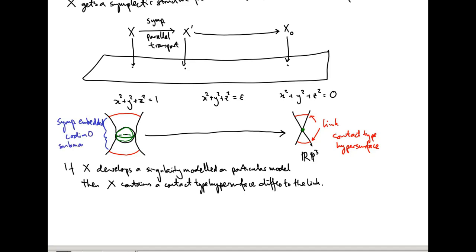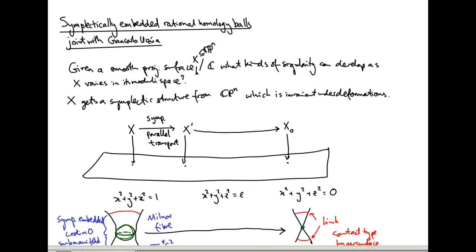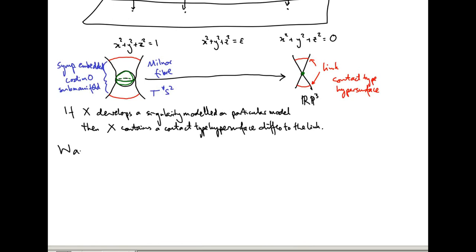This submanifold is called the Milnor fiber. For this particular nodal example, it is diffeomorphic to T*S². So if you can't find a symplectically embedded T*S², then you can't develop a nodal singularity. The specific kinds of singularities I'm going to talk about — the ones that give you rational homology balls — are called Wahl singularities, spelled W-A-H-L.